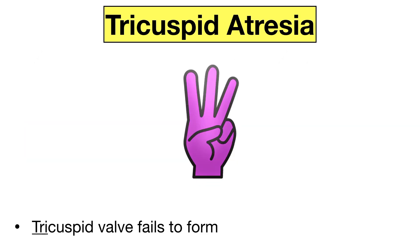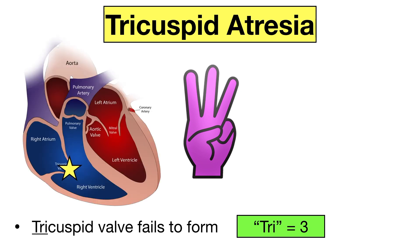The third cyanotic heart defect is tricuspid atresia. For this, you'll hold up three fingers. Tricuspid atresia is a congenital heart defect in which the tricuspid valve fails to form. The prefix tri means three, so holding up three fingers will help you remember tricuspid atresia. Recall that the tricuspid valve is the valve between the right atrium and right ventricle. In tricuspid atresia, the tricuspid valve fails to form and blood from the right atrium cannot enter the right ventricle.